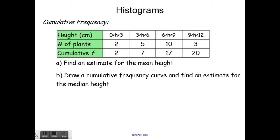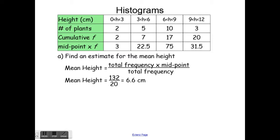Probably the hardest part is finding the mean estimate because it requires the most calculations. What you need to do is find the midpoint of each range and multiply it by the frequency. For example, the range 0 to 3 has three units, so the midpoint is 1.5. Multiplying 1.5 by the frequency of 2 gives 3.